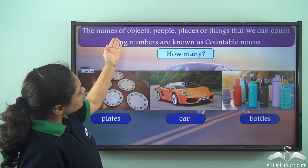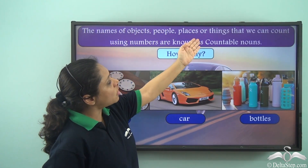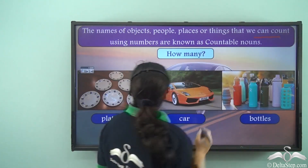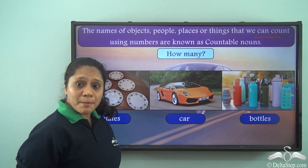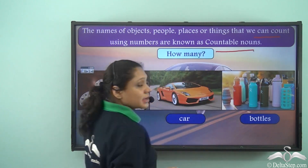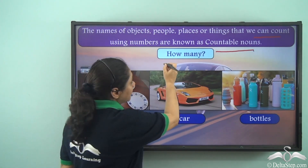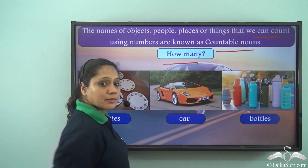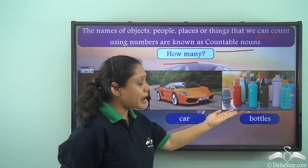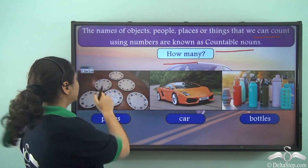The names of objects, people, places or things that we can count using numbers are known as countable nouns. They always answer the question 'how many.' So nouns like plates, car, and bottles are countable nouns.